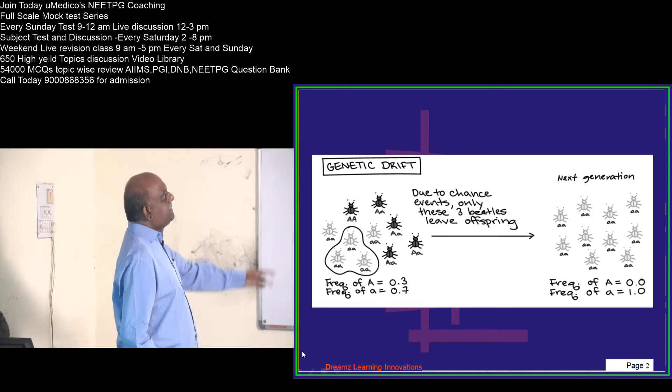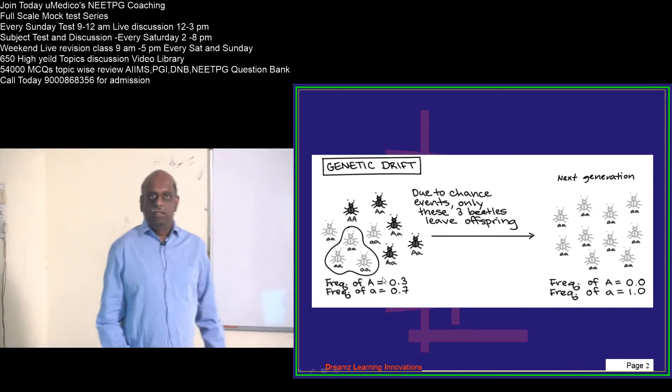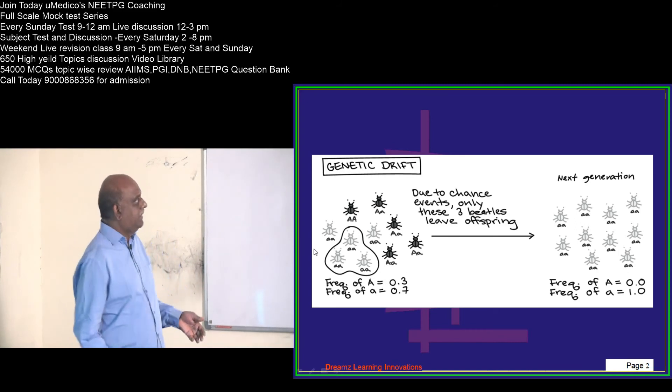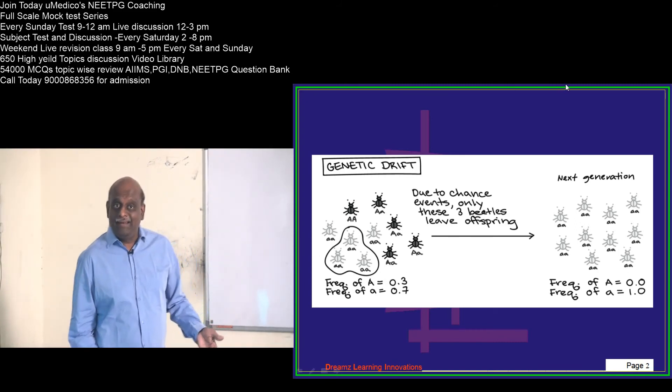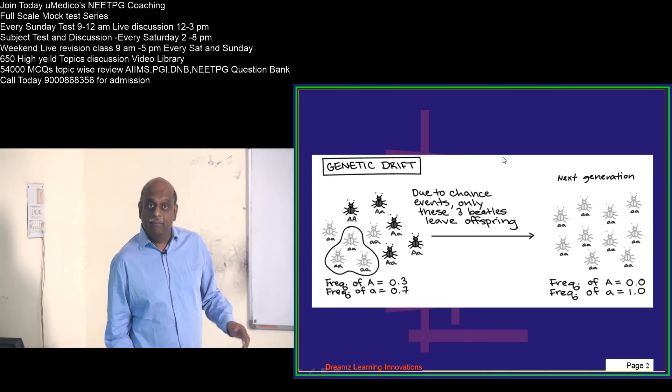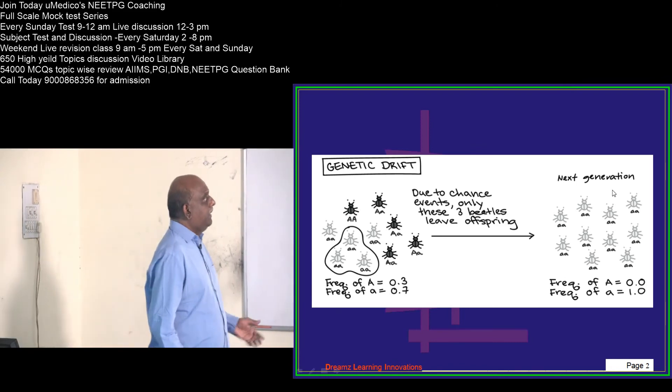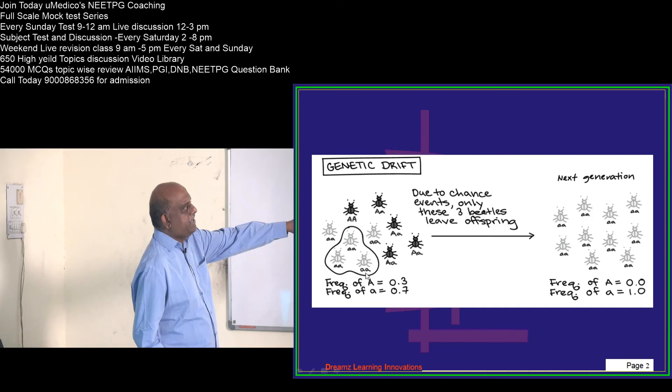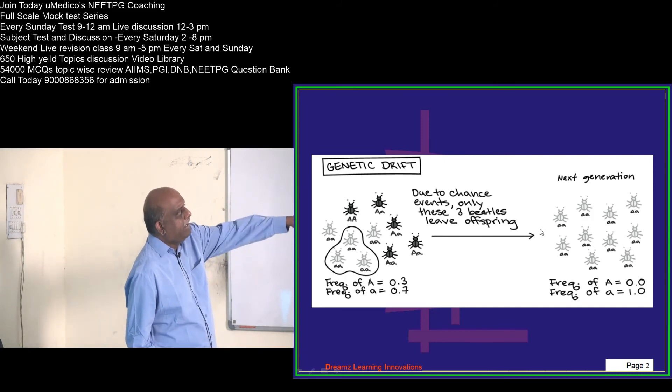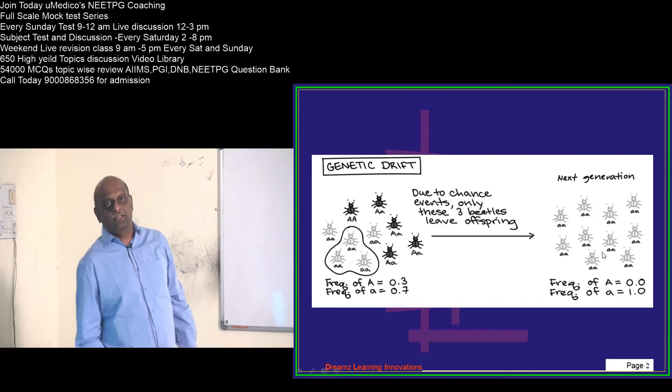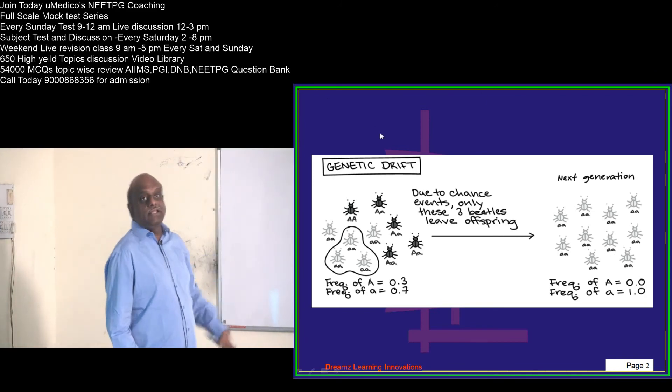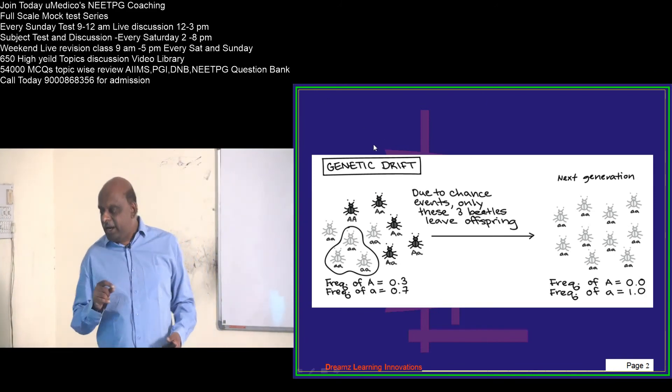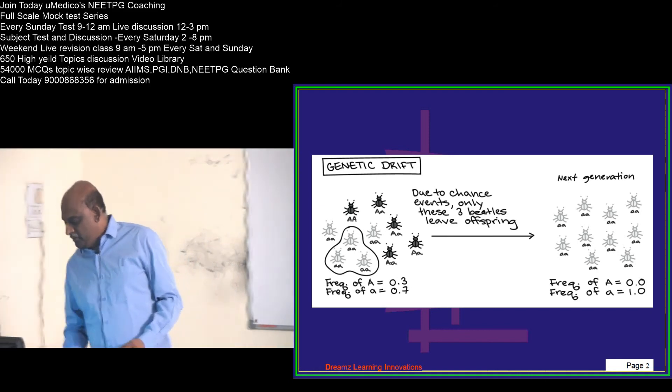So this is an example of genetic drift. By chance, not by a plan or design, but by chance, only these three beetles are able to receive a mutation and they survived, and you get the next generation of all these kind of beetles. That is genetic drift.